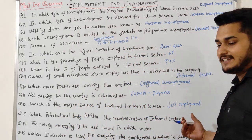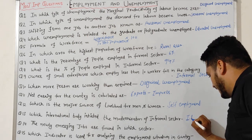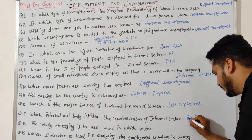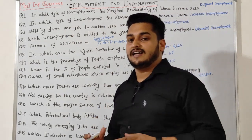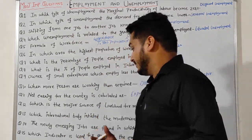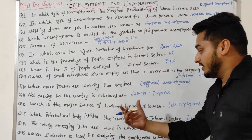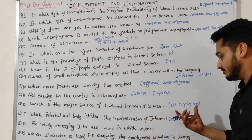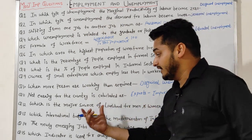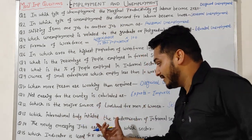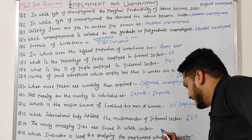Question 13: Which international body initiated the modernization of the informal sector? The answer is ILO — the International Labour Organization. The International Labour Organization is the body that initiated the modernization of the informal sector.